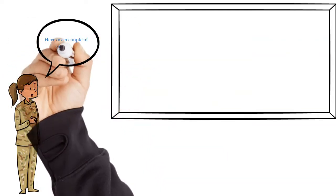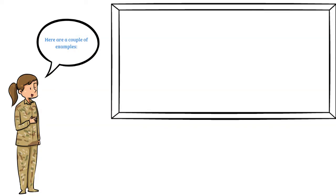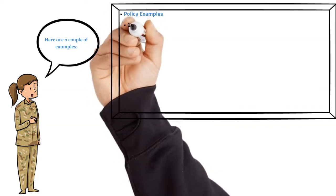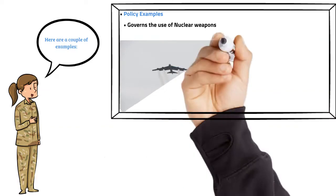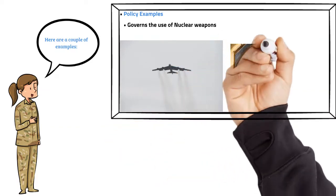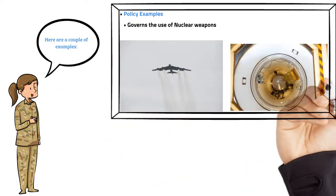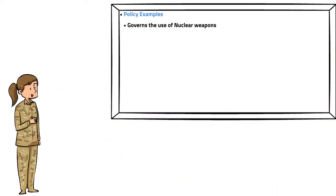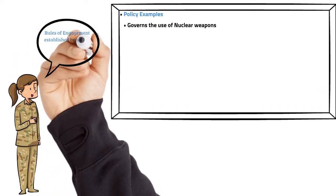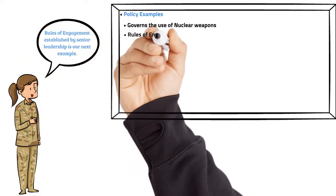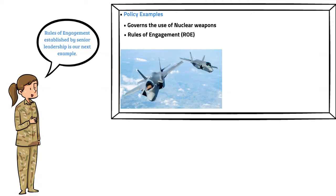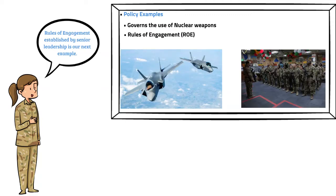Here are a couple of examples of policy. Policy governs the use of nuclear weapons — how they are used is about as directive and mandatory as it gets. Another example would be rules of engagement, established by senior leadership to ensure restrictions and permissions in an operational environment are complied with.